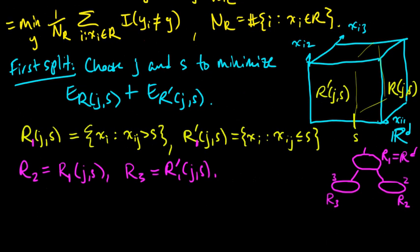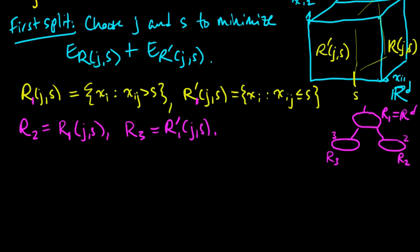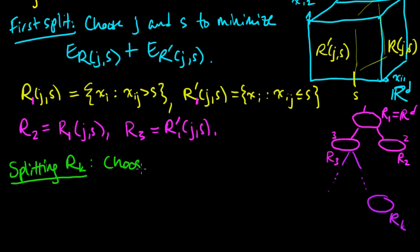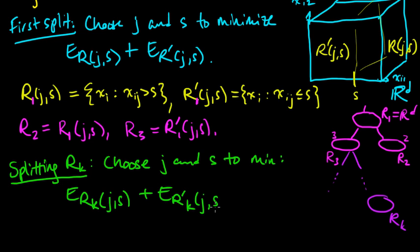Now in general, we need to define how we're going to split at a general node. In general, we'll be at some R_k. Maybe it's one of these, but in general it's some R_k. We need to split R_k. To do that, we choose, just like before, j and s to minimize E_R_k(j,s) plus E_R'_k(j,s).